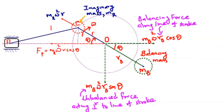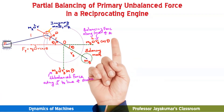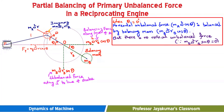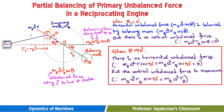Now we can add a rotating counterbalance mass mb at radius rb, diametrically opposite to the crankpin C, as shown in the diagram. The newly added balancing mass mb will have two components: the horizontal component mb·ω²·rb·cos θ acting along the line of stroke towards the right, and the vertical component mb·ω²·rb·sin θ acting vertically downwards. When θ = 0°, the balancing force along the line of stroke balances the unbalanced primary force, and there is no vertical unbalanced force.